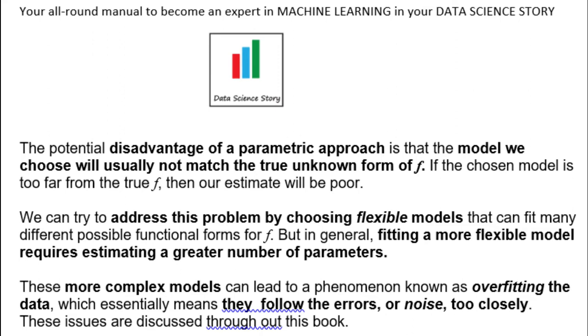The potential disadvantage of a parametric approach is that the model we choose will usually not match the true unknown form of f, or the relationship between X and Y. It is possible that the model we choose is too simple to predict the relationship between X and Y.